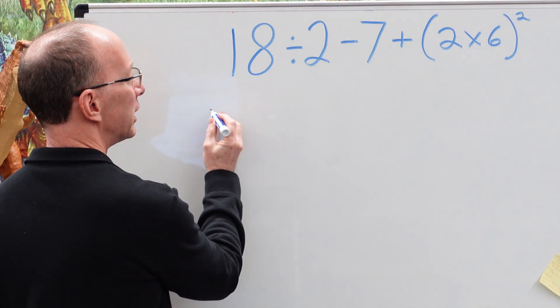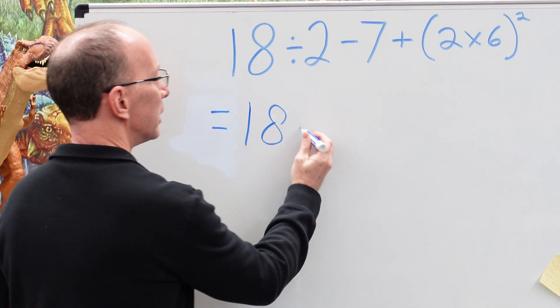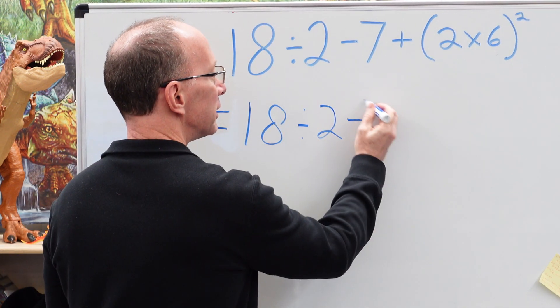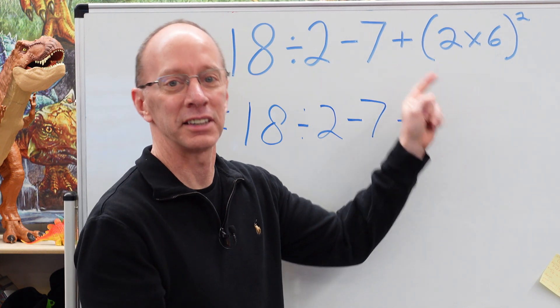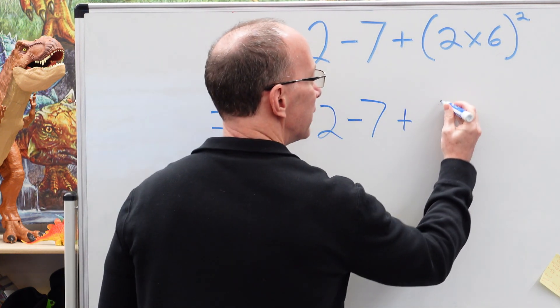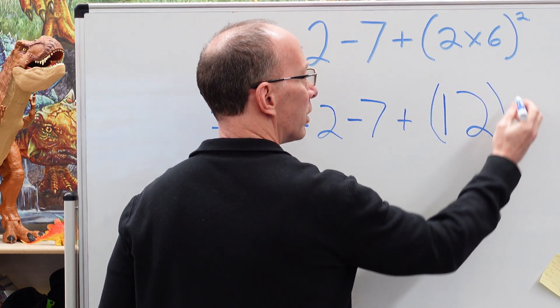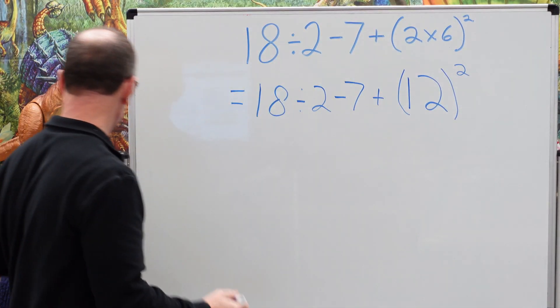So let's go ahead and rewrite this problem here. So we're going to go ahead and do our parentheses here. So that would be 18 divided by 2 minus 7 plus whatever's inside the parentheses. That is 2 times 6, which is 12. So that is 12. And I'm going to keep those parentheses right around on that 12 and put the exponent there.